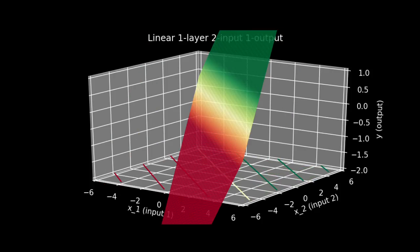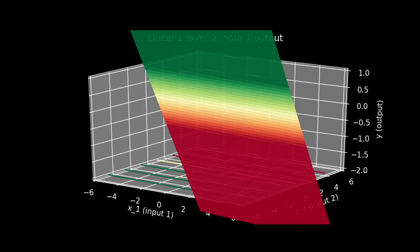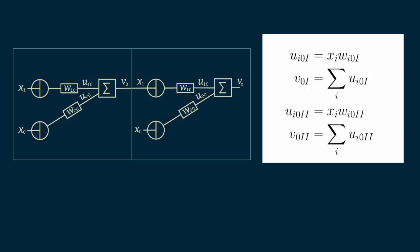So far, so good. Now we can start to get fancier. Our input, x sub 1, looks a lot like our output, V sub 0. In fact, there's nothing to prevent us from taking our output and then using it as an input to another network just like this one.